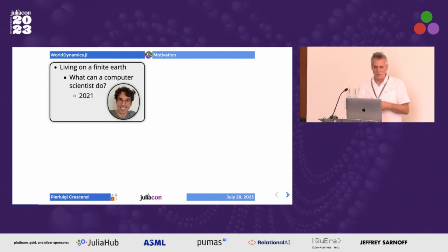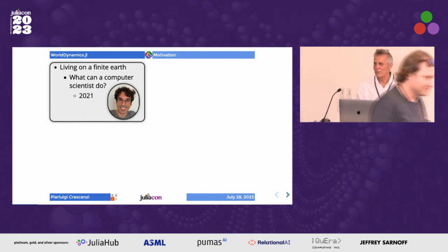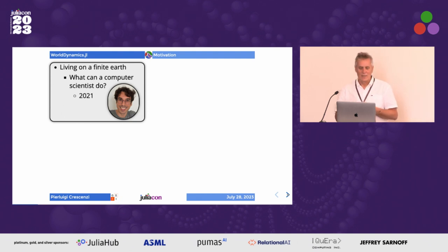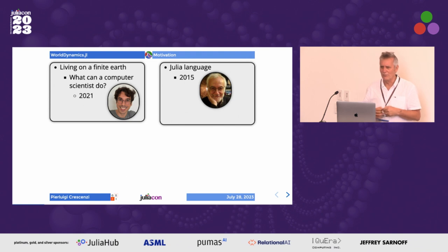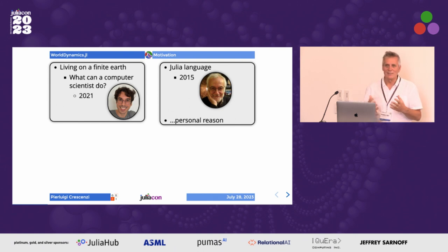Actually, spending one week on the mountain with Emanuele, who is there, and with a friend and colleague of mine working on brain computation models, Emanuele taught me about the problem of the fact that we live on a finite earth, which means we live on a world in which non-renewable resources are finite. So he asked me: what can a computer scientist do? Actually, six years before, another friend of mine, Giorgio Gambosi, introduced me to the Julia language — I think we are talking about version 0.4 or 0.5 — and I was immediately fascinated by this language. There are also some personal reasons because my wife's name is Julia.